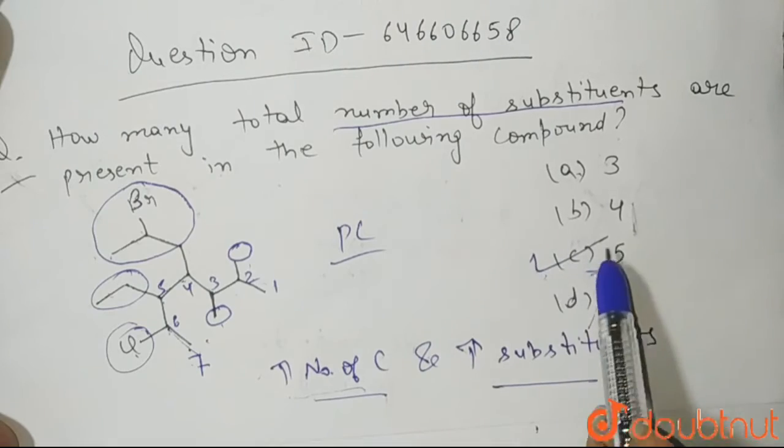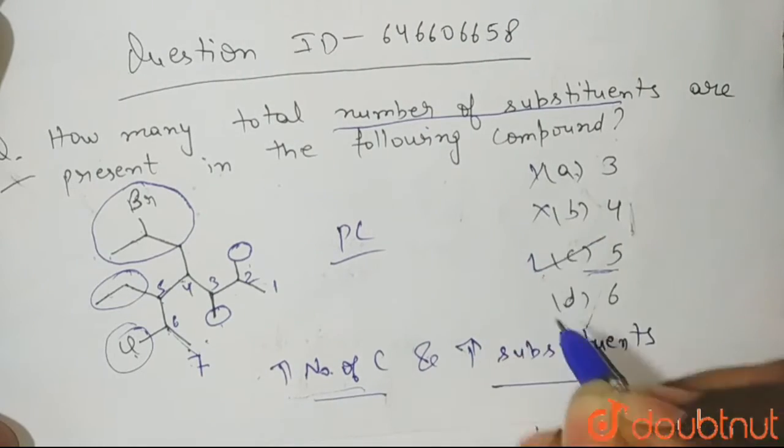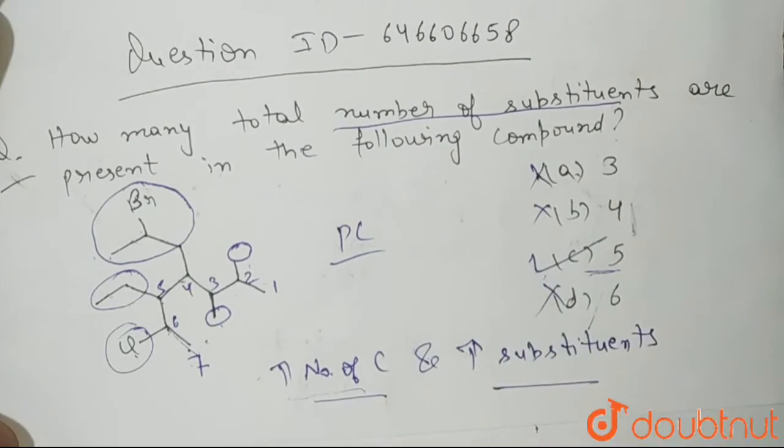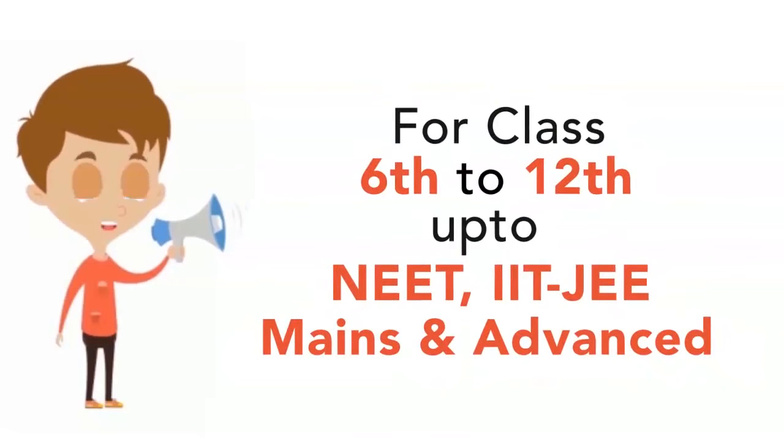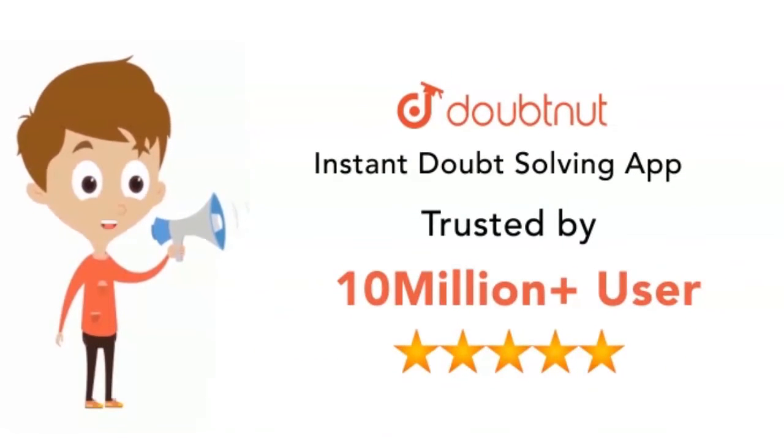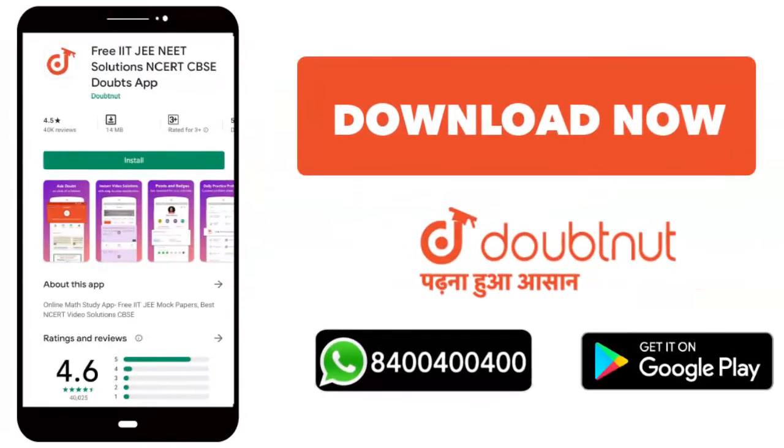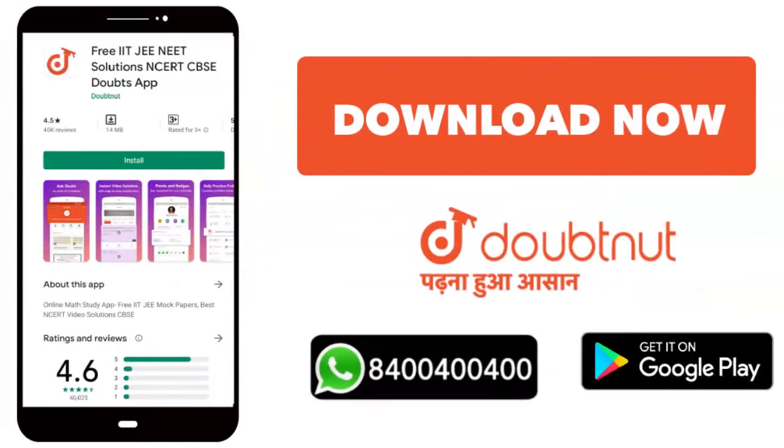So your correct answer is option C and the rest are incorrect. C is the correct answer. I hope you understood. Thank you so much. Class 6th to 12th se leke NEET, IIT-JEE Mains or Advanced ke level tak 10 million se zada students ka bharosa. Aaj hi download karein Doubtnet ya WhatsApp kijiye apne doubts 8444 super.